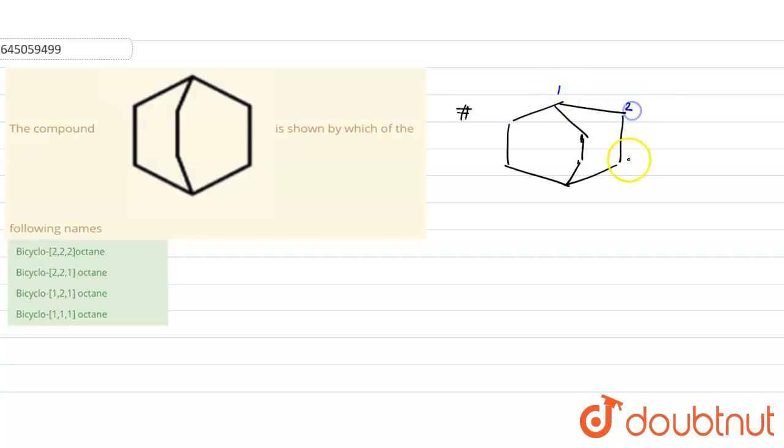You can start naming from any bridged carbon atom. This is bridge carbon atom 1, 2, 3, 4, 5, 6, 7, 8. This is 7 and 8 carbon. You can name them like this. There is no need to name them in the continuous manner.